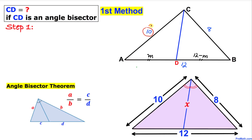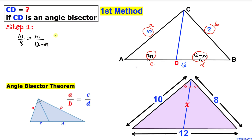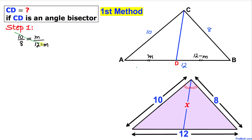We are going to use this theorem in our example. In this case A is 10, B is 8, and we apply the theorem: 10 over 8 equals M divided by 12 minus M. Now let's use cross multiplication to simplify.